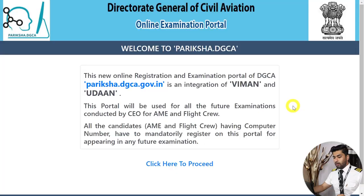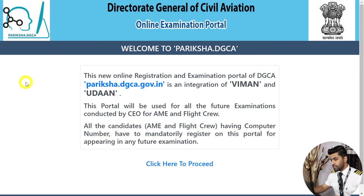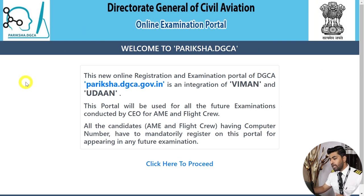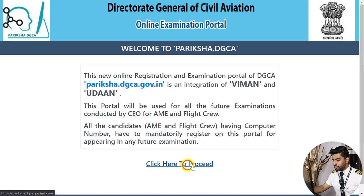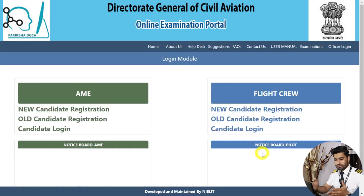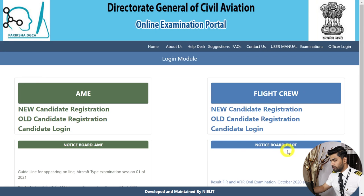Considering that you already have your computer number, let's jump into the system and see how you can apply for your pilot licensing examinations. The portal for applying is pariksha.dgca.gov.in — I'll link this website in the description box. Click here to proceed, and this is the same portal used for applying for a computer number.